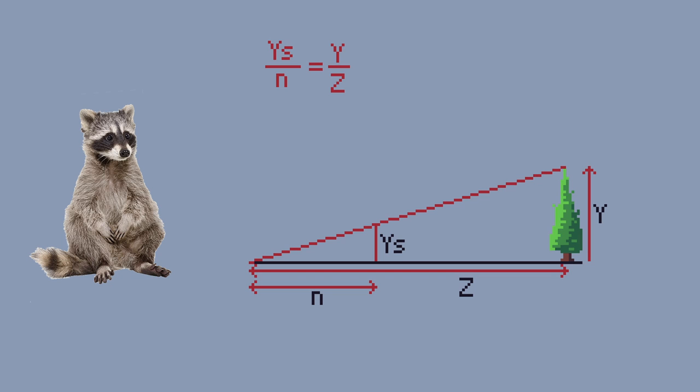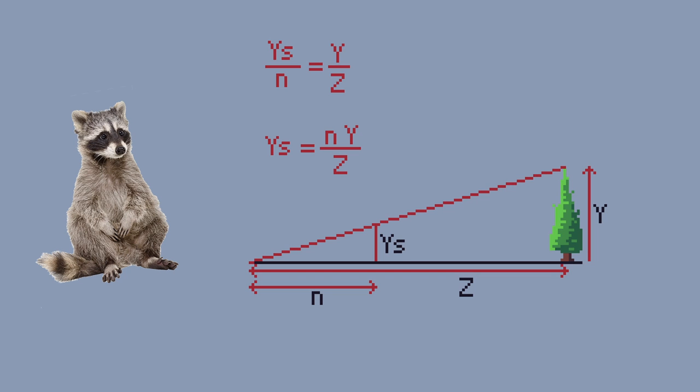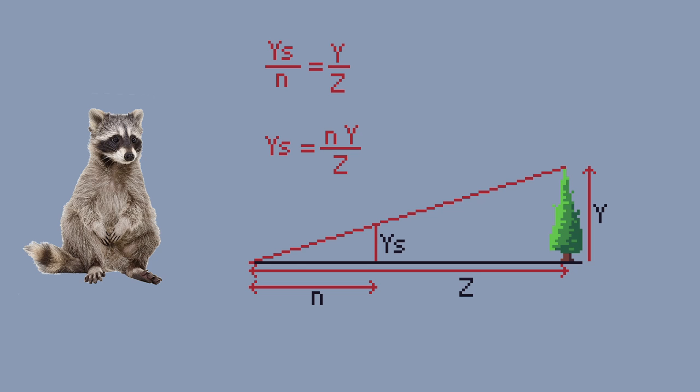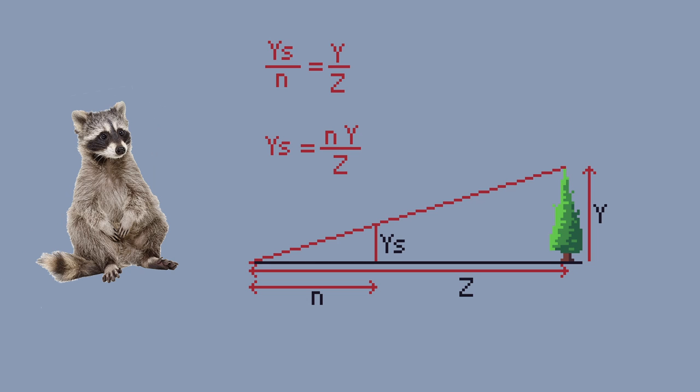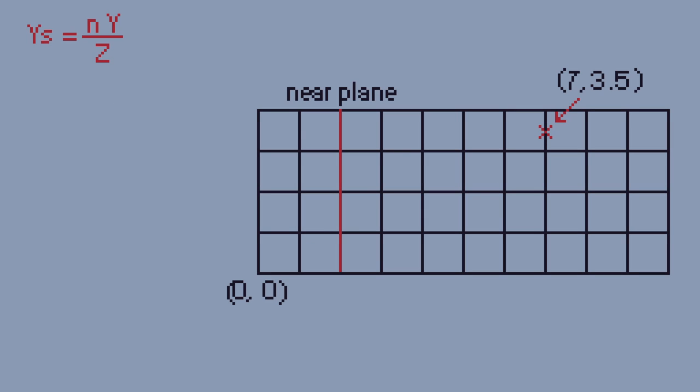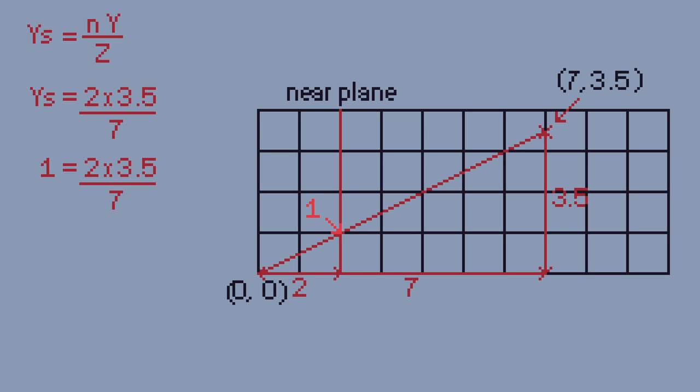So in order to find ys we can use the following equation. This shows that the apparent height of the tree ys is equivalent to the distance to the near plane n multiplied by the object's true height y and then divided by the distance to the object which is z. Let's imagine a more simple example where we want to find out where this point would appear on our near plane from the camera's position at the origin. So we use the camera's distance to the near plane which is 2 in our case and multiply it by the object's true height which is 3.5. Then we divide it by the distance to the object and we find our perceived height is 1. If we check this by drawing a line, yep, 1.